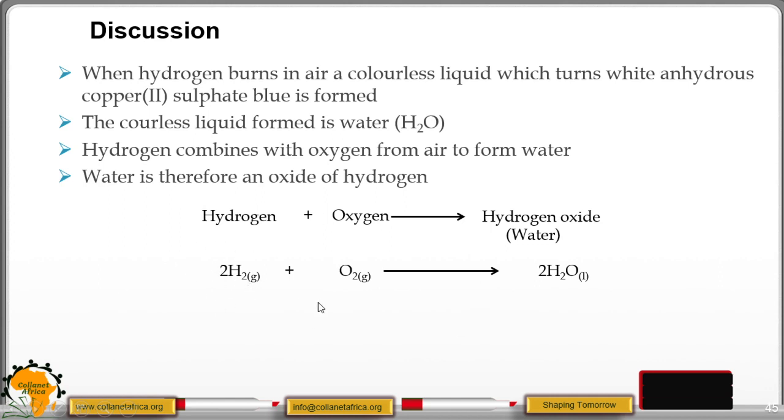We have H2, that's the hydrogen gas. O2 is the oxygen gas. Both of them are gases at room temperature. That's why we have the small g in brackets.